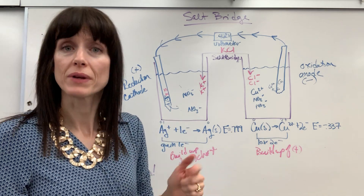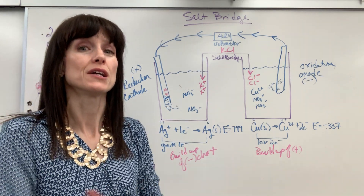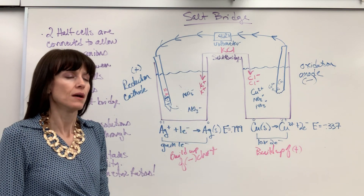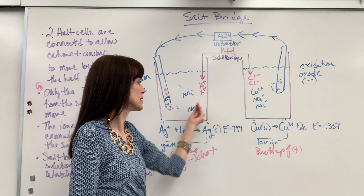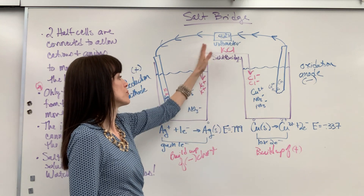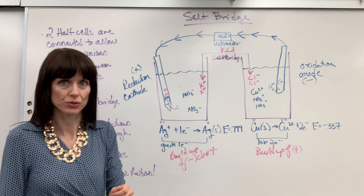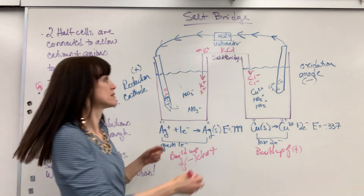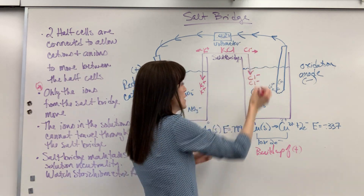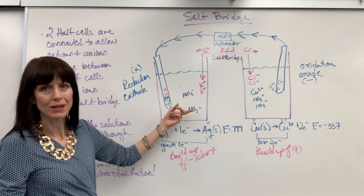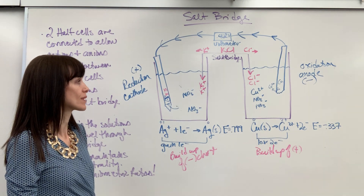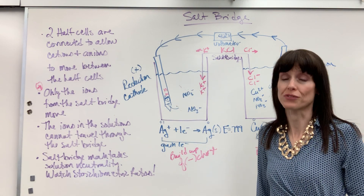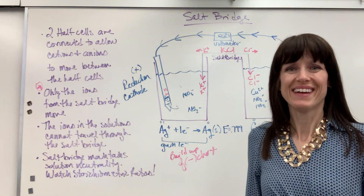If this electrochemical cell is confusing at all, please go to my redox electrochemistry playlist and watch the electrochemical cell video — it gives you an overview of what's happening. Big takeaway: as you get a buildup of charge in the half cells, the salt bridge fills in ions to keep those half reactions neutral. Potassium+ goes into the silver side because we're losing the plus. Chloride goes into the copper side to neutralize the positive buildup. Remember — the solution ions do not move through the salt bridge, ever. It's only the ions of the salt. Good luck!